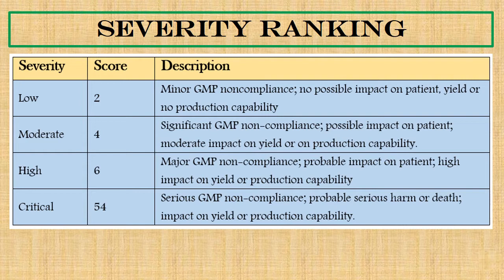In case of significant GMP non-compliance and possible impact on patient and moderate impact on yield or production capability, the identified risk is categorized as high. If serious GMP non-compliance is foreseen, probable serious harm or death is foreseen for the patient, and impact on yield or production capability is high, then the identified risk will be categorized as critical. We assign scores in increasing order: 2, 4, 6, and 8 to low, moderate, high, and critical severity ranking respectively.